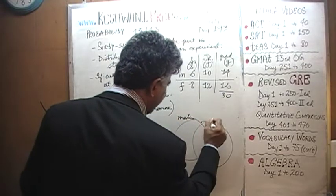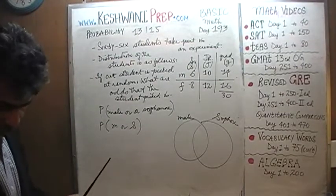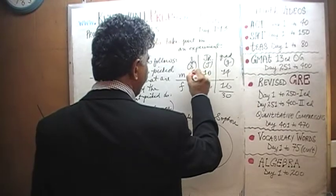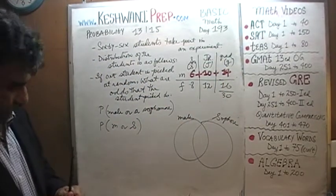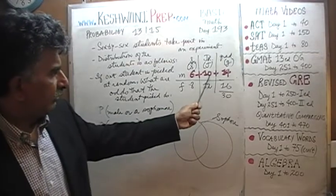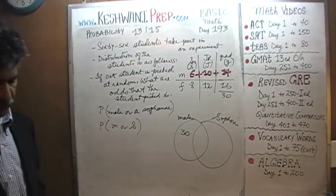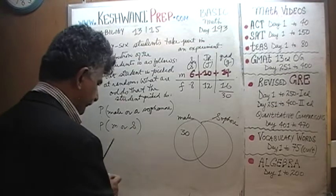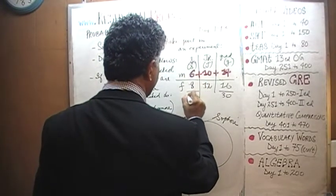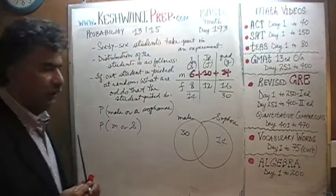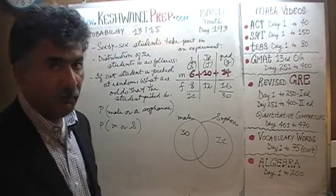Here we're going to have our males, and here we're going to have sophomores. How many males do we have? Males are 6 plus 10 plus 14, which is 30. How many sophomores do we have? Sophomores are simply 6 plus 8, which is 14. You can clearly see that we have some double counting going on.